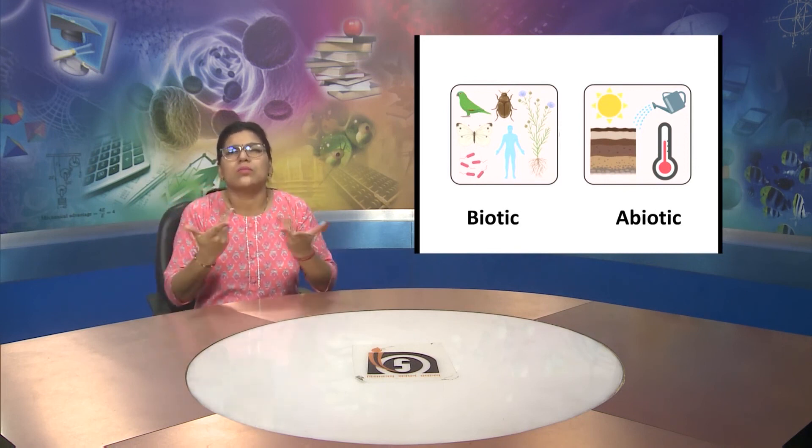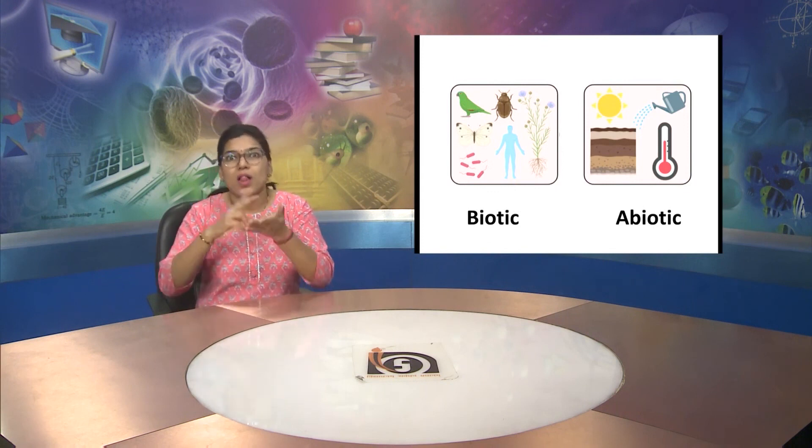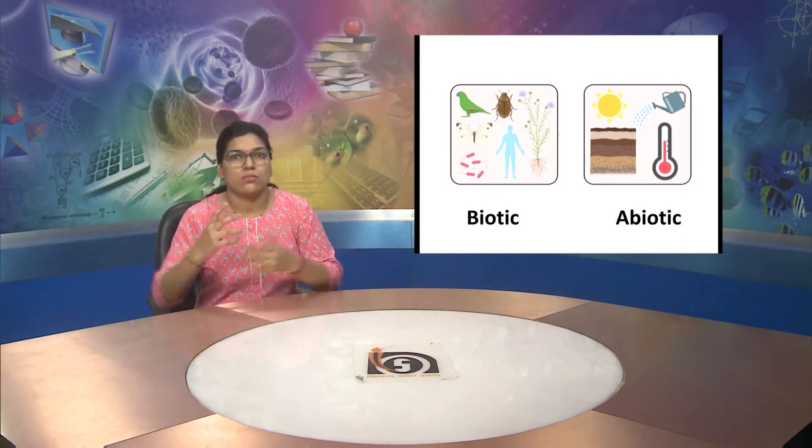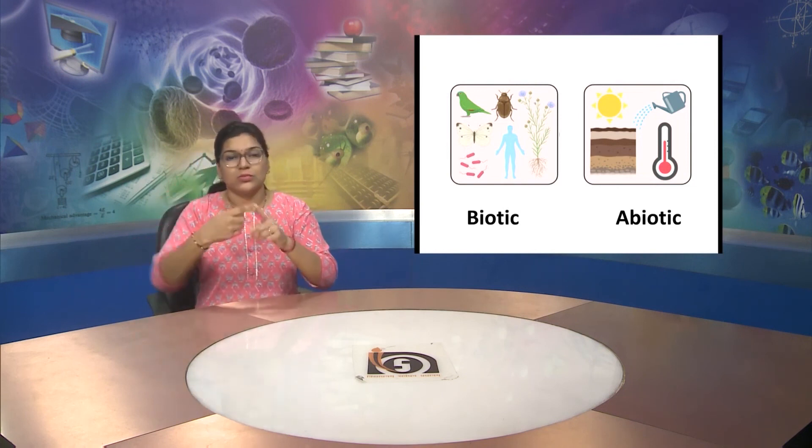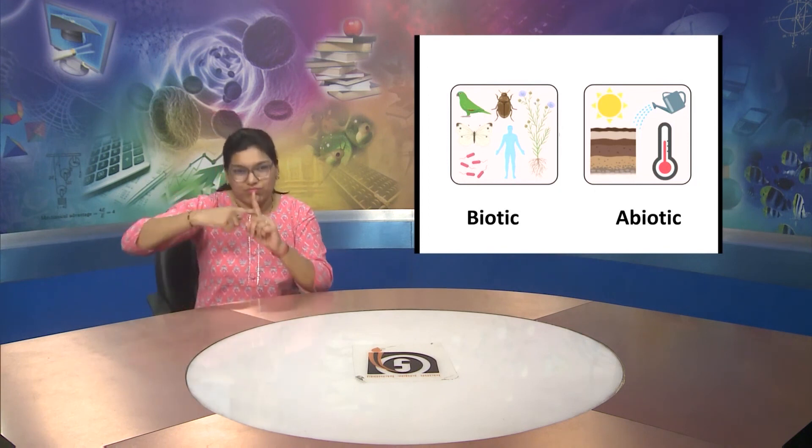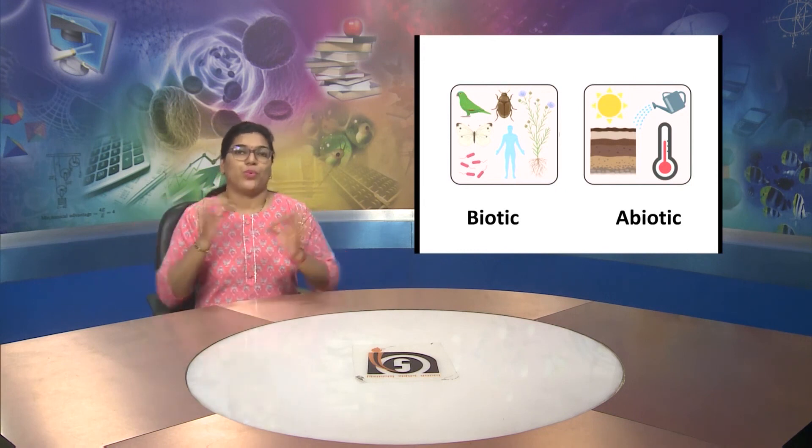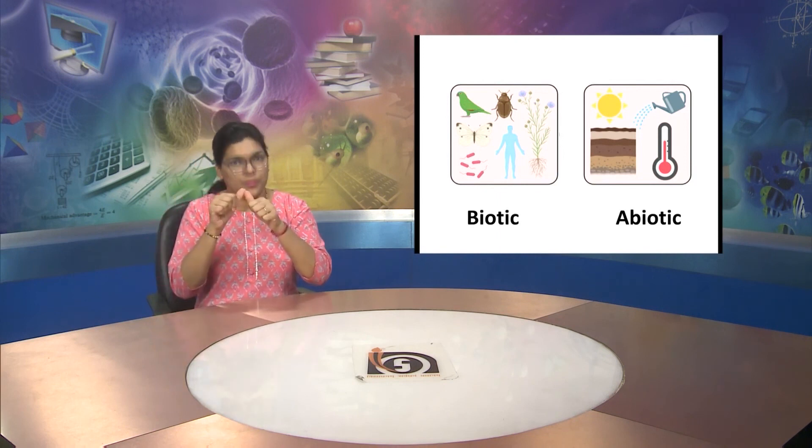Abiotic is the group of things which cannot move from one place to another place by themselves such as sun, land, temperature, water etc. That is called abiotic.